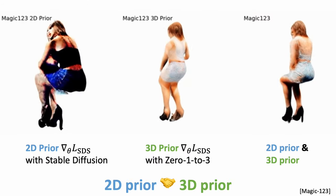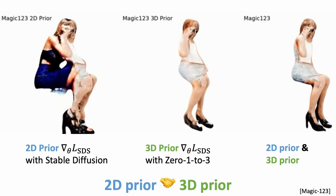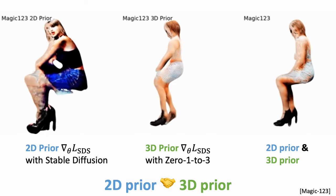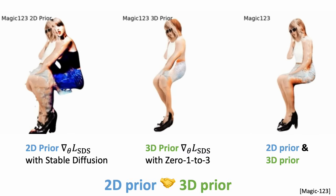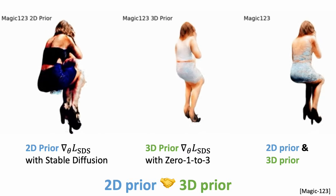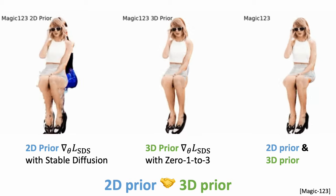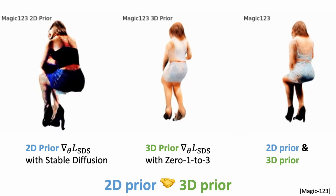On the left, we see using 2D priors only suffers from multi-face artifacts. In the middle, the 3D priors help synthesize better geometry but have blurry appearance. On the right, using both 2D and 3D priors produces good geometry and appearance.